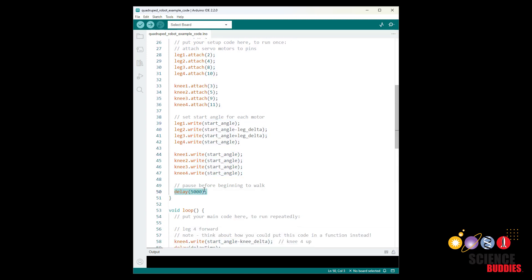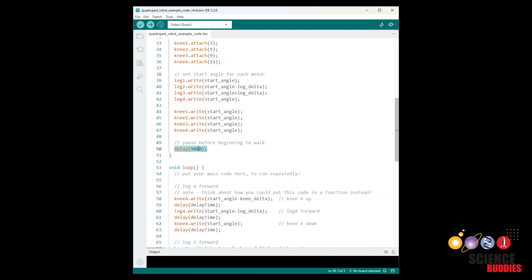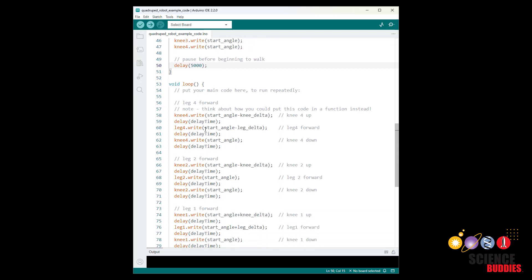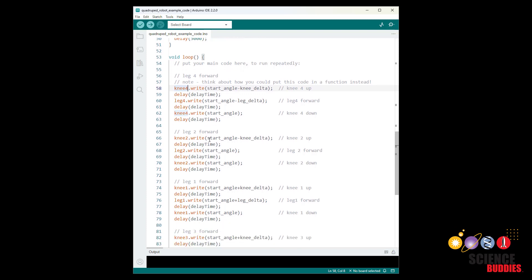And then you enter the loop function where you can program your gait using write commands to change the angle of each motor. So this is the really open-ended part where you're going to need to experiment and change this with the order you move the different motors and the angles you move them to to see what makes your robot walk best.